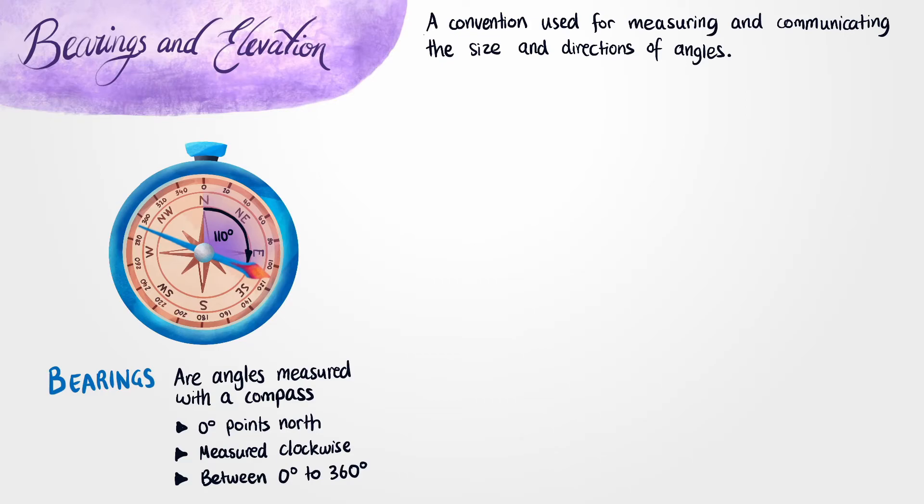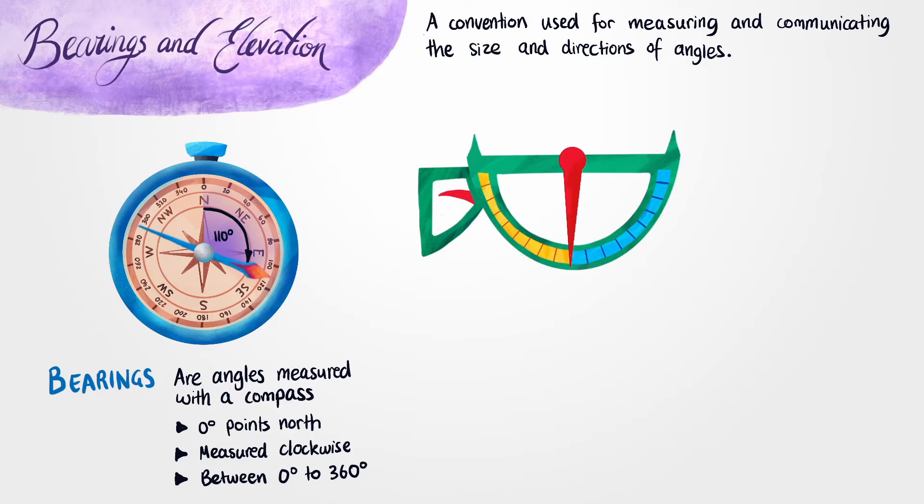Now for the next example, I'm going to draw on a device that we call a clinometer. Now clinometers are special devices that we use to measure angles in the vertical direction. They work by having a freely hanging needle that always points straight down because of gravity. And then over here we have a scale that's also measured in degrees.